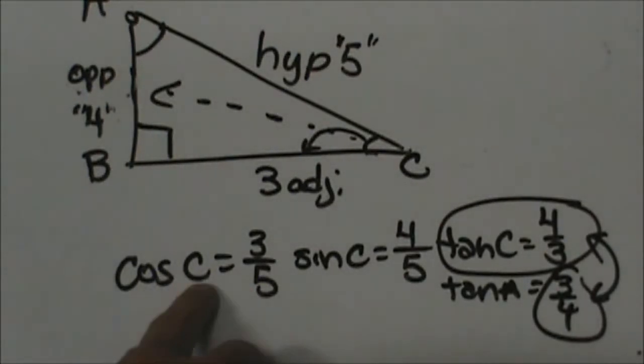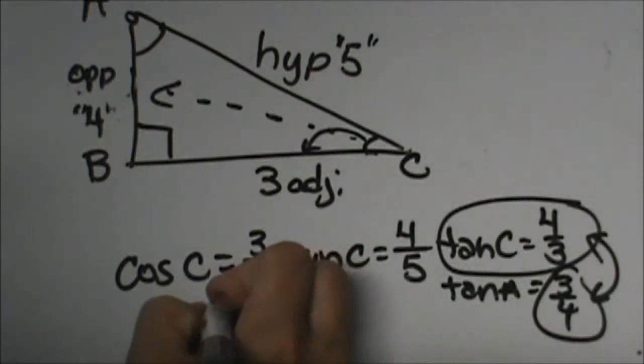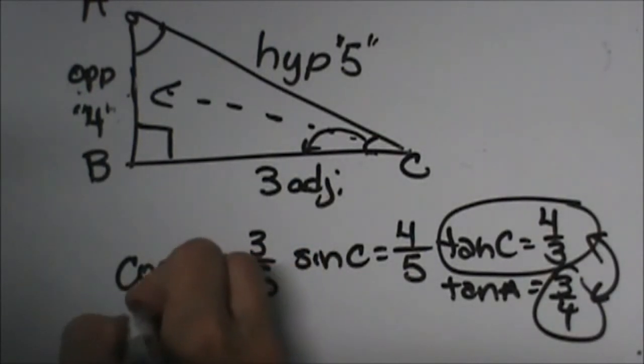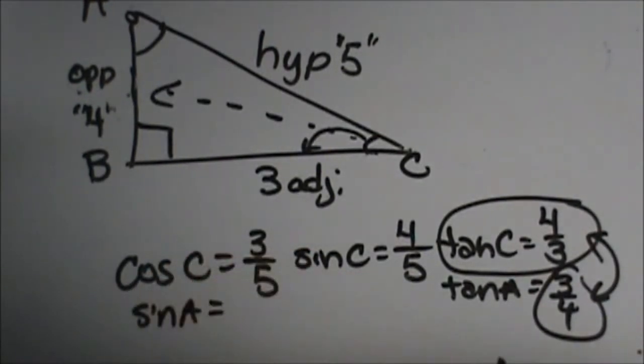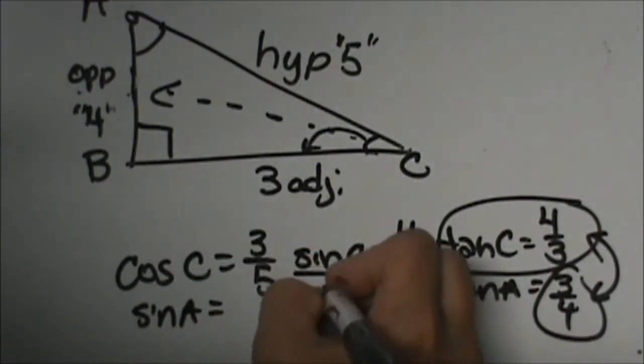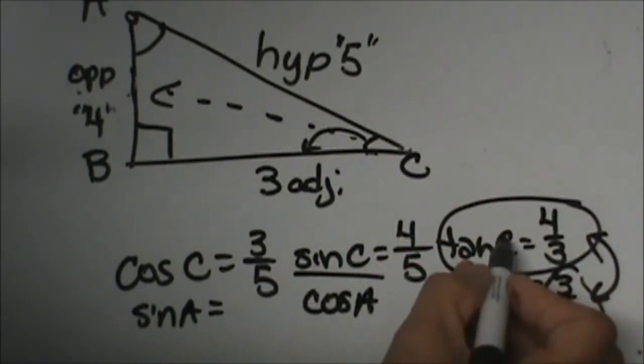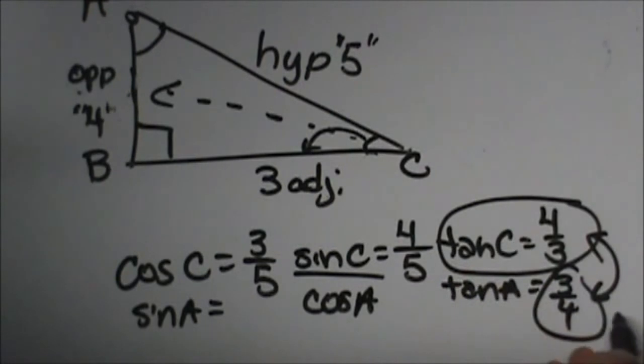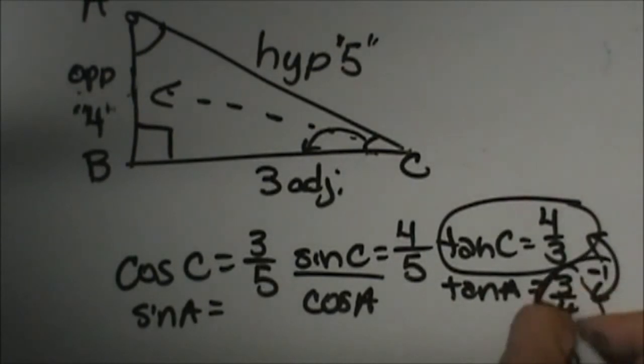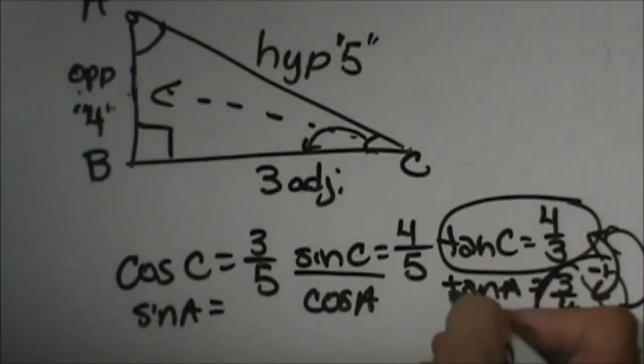So the cosine of C is equal to the sine of A and the sine of C is equal to the cosine of A and the tangent of C is equal to the inverse of the tangent of A.